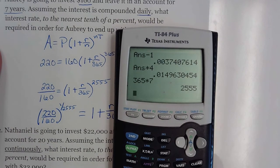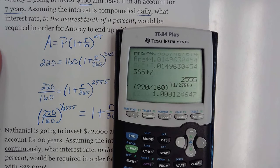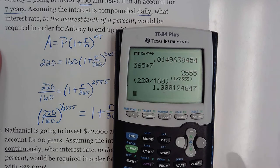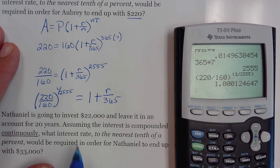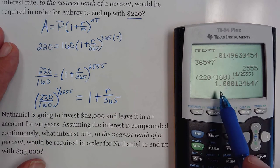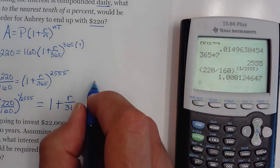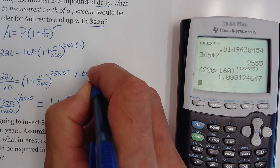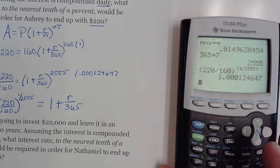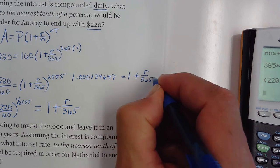Let's see, in my calculator, 220 divided by 160 to the power of 1 divided by 2555, I get that value. Now I don't want to shortchange that value, so you might want to leave it in your calculator. What happened was this turned into that value. I'm going to write it down for this one. It would look like 1.00012464647, and that's supposed to equal 1 plus my rate divided by 365.